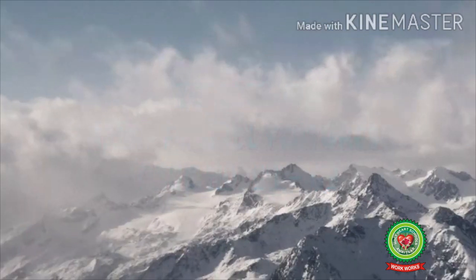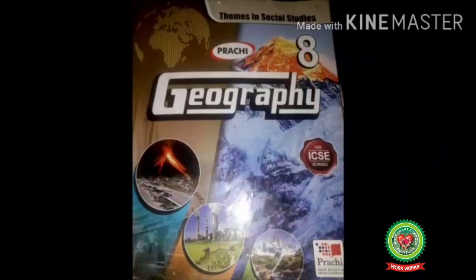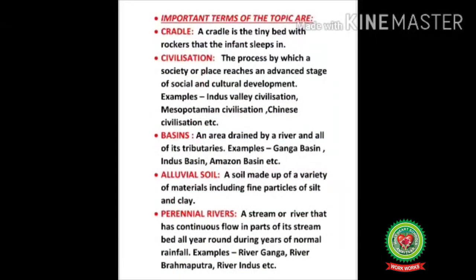This is given on your page number 68-69 of your geography book. Before we start the topic, let's discuss the important terms. Number one is 'cradle' — a cradle is the tiny bed with rockers that the infant sleeps in. 'Civilization' is the process by which a society or place reaches an advanced stage of social and cultural development. Examples: Indus Valley civilization, Mesopotamian civilization, Chinese civilization, etc.